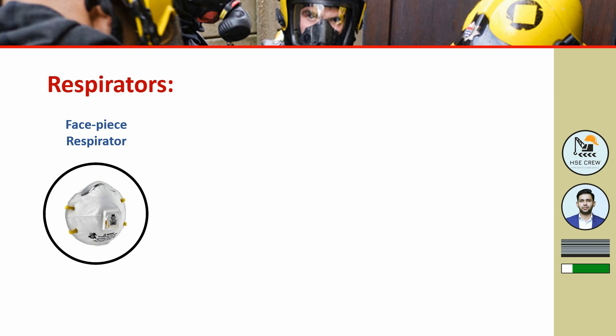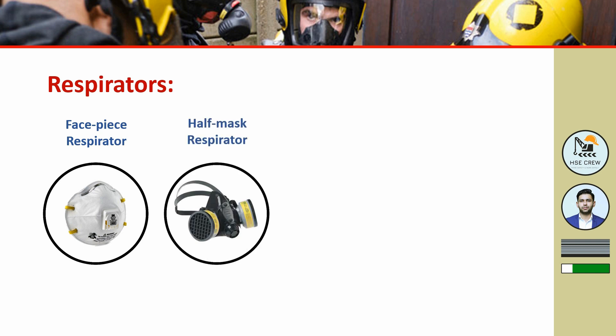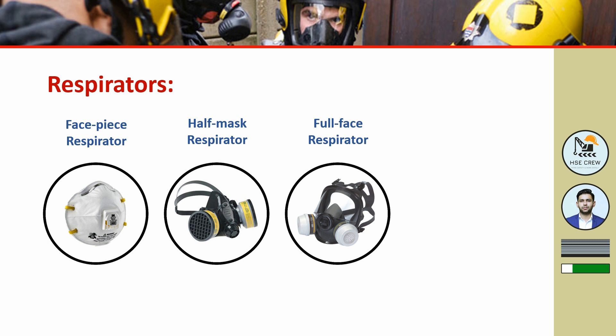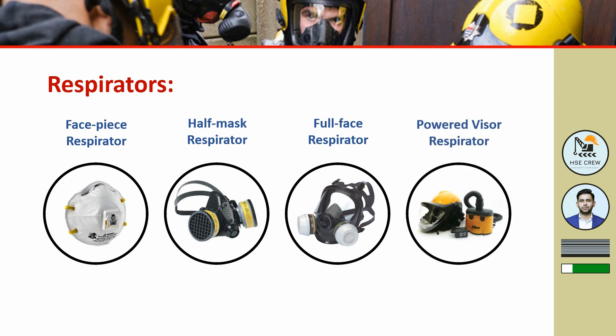Next is half mask respirators. Half mask respirators cover our face and nose. In half mask respirators we use cartridges that have a specific range of application and protection. Next is full face respirators. Full face respirators are very similar to half mask respirators, but they cover the full face and offer protection to the eyes as well. They also use cartridges with specific applications and range of protection. Next is powered respirators, which work similarly to full face respirators but use a powered source to push air through the cartridge, making breathing easier.